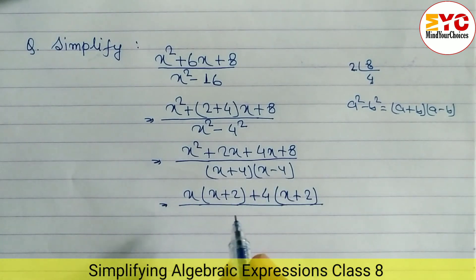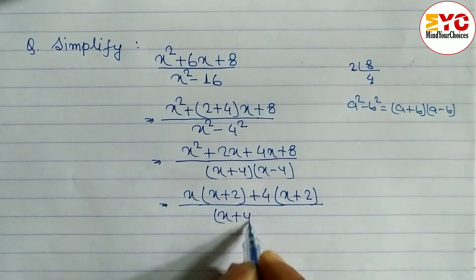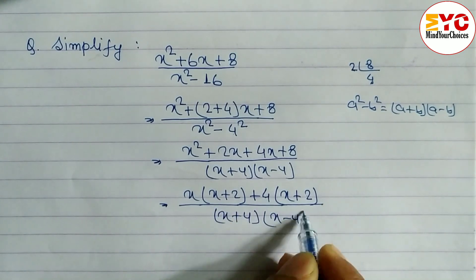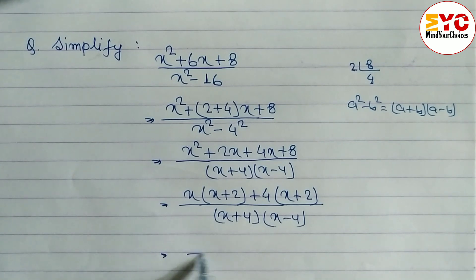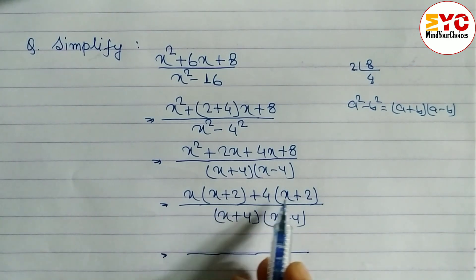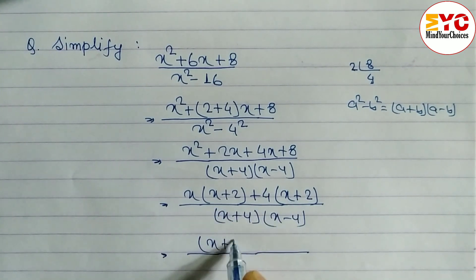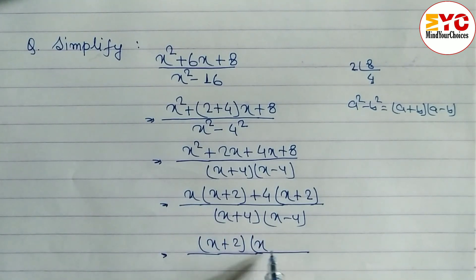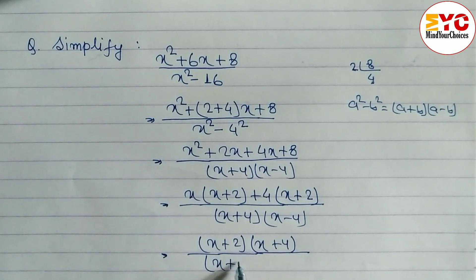In the denominator what is here? (x+4)(x-4), we have to write down the same. After this you can see here x + 2 and x + 2, so we can take x + 2 common. What is remaining? Here is x and here is 4, so we can write (x+2)(x+4). In the denominator we have (x+4)(x-4).